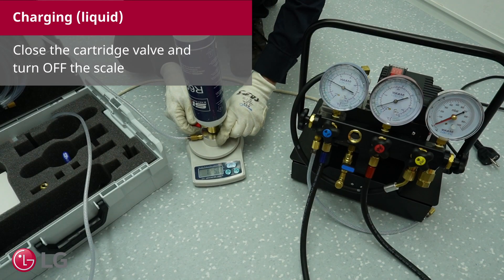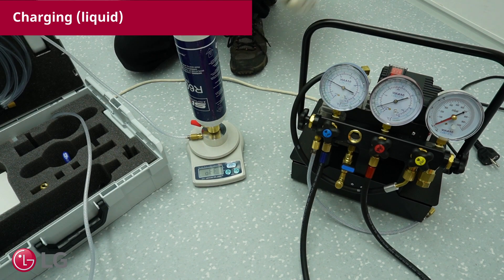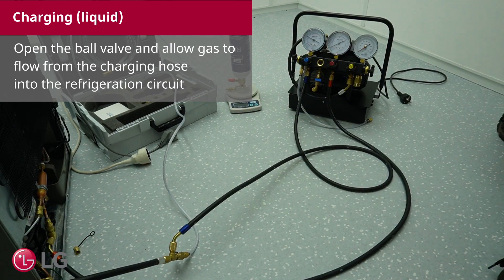Close the cartridge valve and turn off the scale. Open the ball valve and allow gas to flow from the charging hose into the refrigeration circuit.